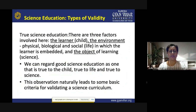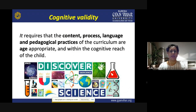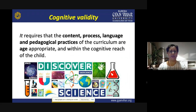NCF 2005 gives various validities for a science curriculum. The first is cognitive validity (gyanatmak vaiyata). It requires that the content, process, language, and pedagogical practices of the curriculum are age appropriate. The content should be within the cognitive reach of the child — suited to the mental level of the student — whether at the primary, upper primary, secondary, or senior secondary level.